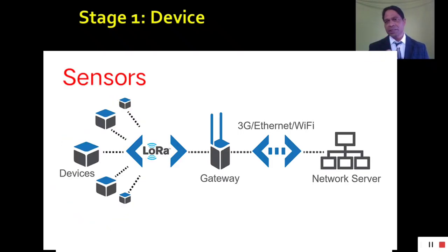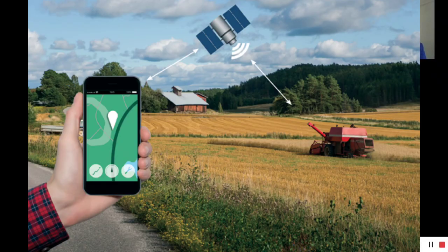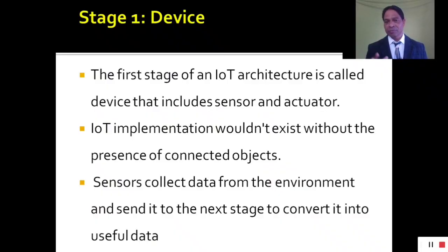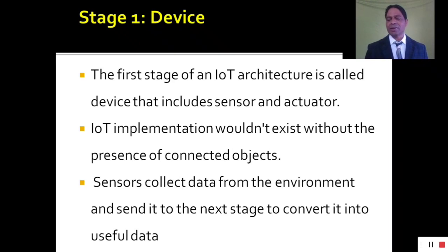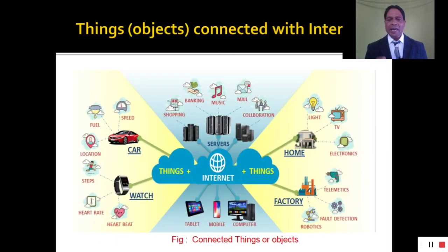IoT implementation you can't imagine without the presence of connected objects, which is the purpose of IoT networks. Sensors collect data from the environment and send it to the next stage to convert it into useful data. This figure shows clearly about the connected objects and sensors.